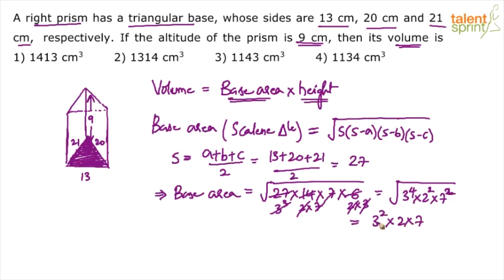So what comes outside is 3 squared into 2 into 7. So 2 into 7 is 14. 14 into 9. How much is 14 into 9? 126. So this is the base area.